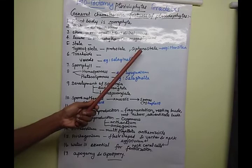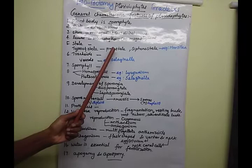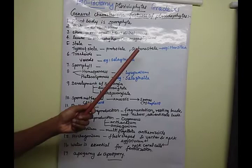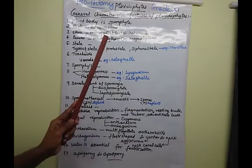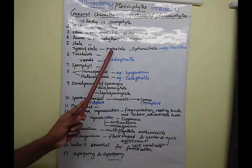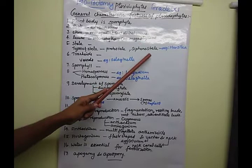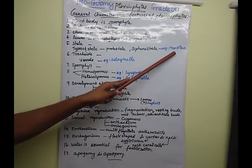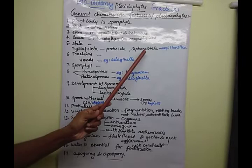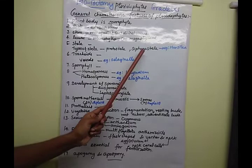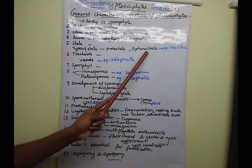Protostele means the xylem is present and surrounded by phloem elements. Siphonostele means the xylem is surrounded by phloem, but the central region has pith present. Most cases they are present as protostele; in some cases only, they are present as siphonostele. A good example of siphonostele condition is Marsilea.